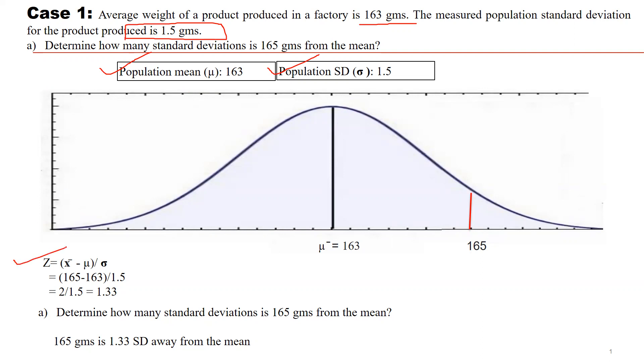First of all, we are going to apply the z-test: z = (x̄ - μ) / σ. 165 is our x̄, that is mean, and 163 is our population mean, divided by 1.5, that is our standard deviation of the population. The formula is 2 / 1.5. So now the value of z is 1.33.